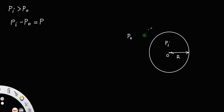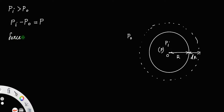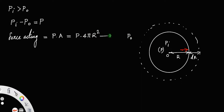This excess pressure increases the surface area of the air bubble to a new radius dr. There is an excess pressure P inside the air bubble which increases its radius. There will be a force acting radially outward. That force F is equal to pressure times area. The pressure here is the excess pressure and the area of the sphere is 4πr². Let us call that equation number one.